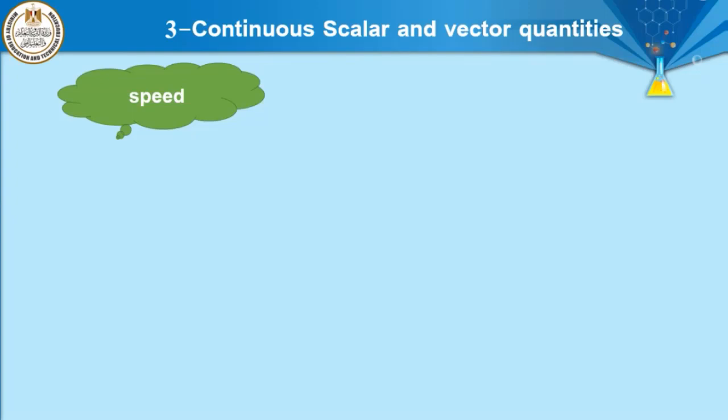In the previous session, we talked about the difference between distance and displacement. Distance is the actual path covered by the moving object from the starting point to the ending point. While displacement is the distance in a certain direction.